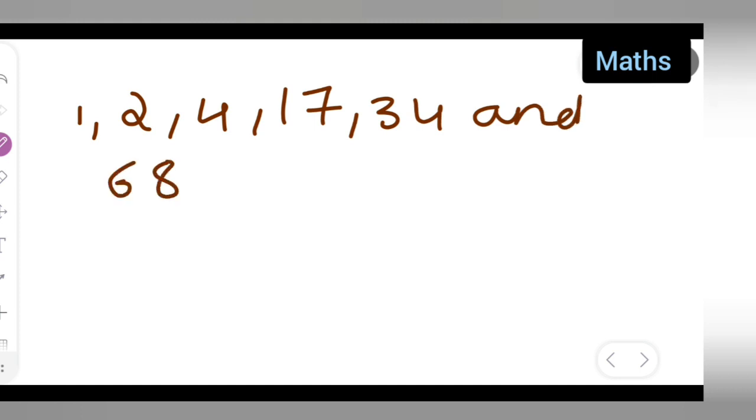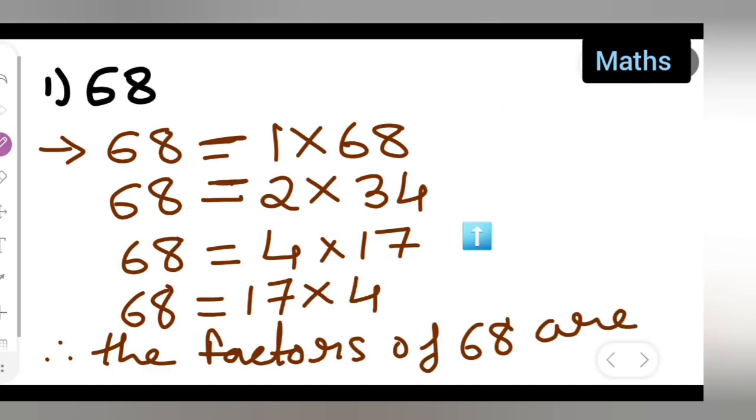These are the factors. Let me use some other color to show you all this. So, 1 is the factor, 2 is the factor, 4 is the factor, then 17 is also the factor, then 68 is also the factor and 34 is also the factor. So, these are the factors which I have written it over here.